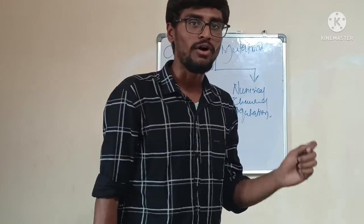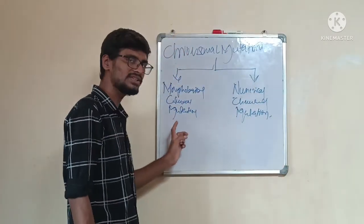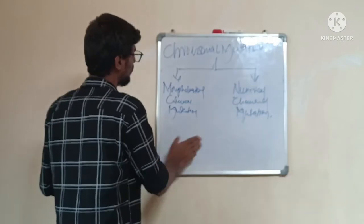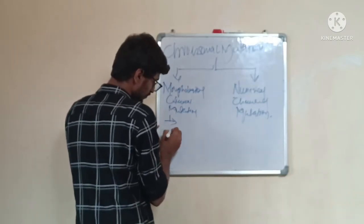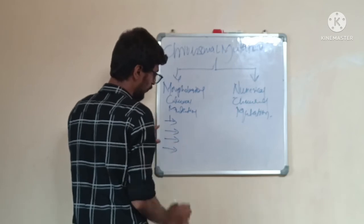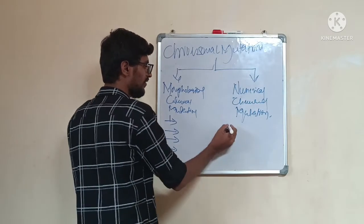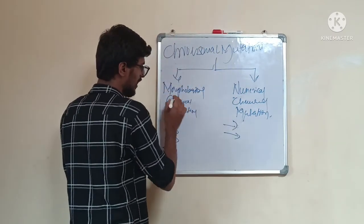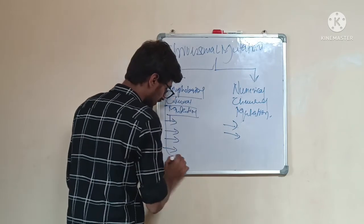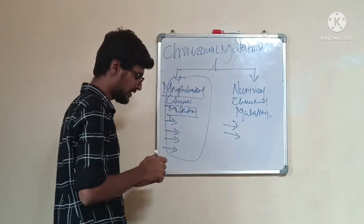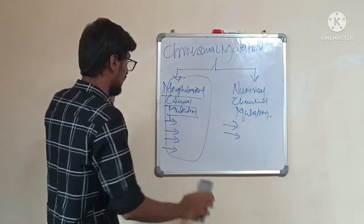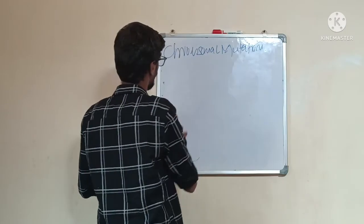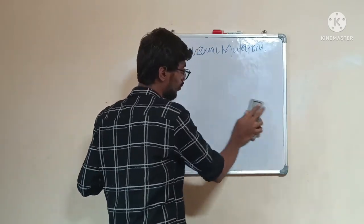These two types of chromosomal mutations are based on either a change in the physical character or a change in the number of chromosomes. We will now study the types under morphological chromosomal mutation in detail.